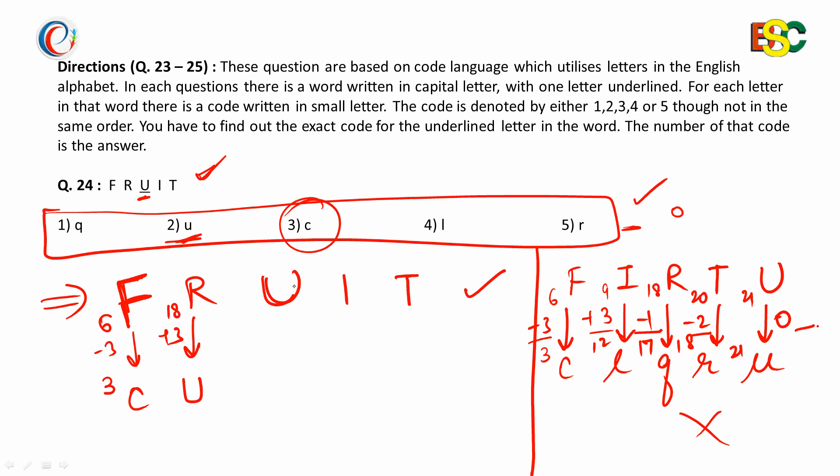Further, U, the rank of U is 21. Again, we will subtract 3 from 21. It is 18 and 18th letter is R. It is also given in the code.